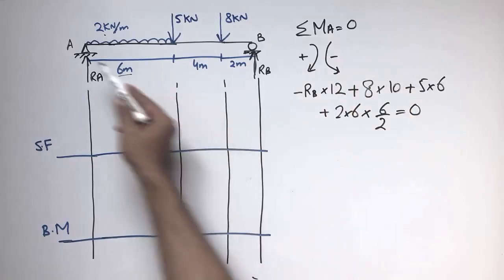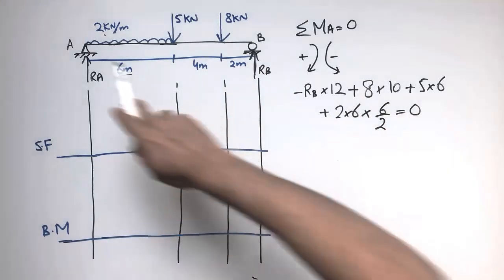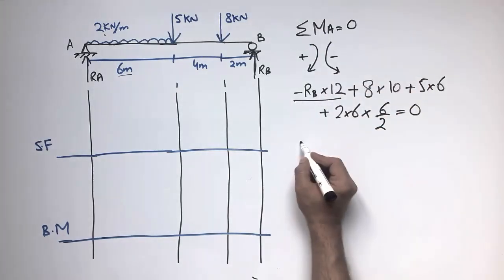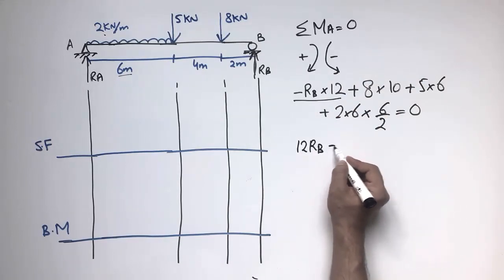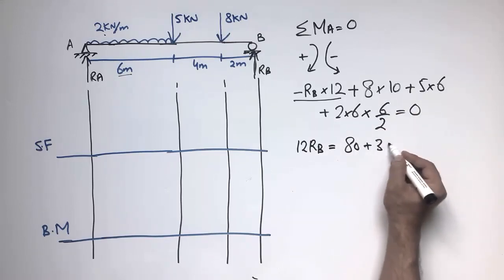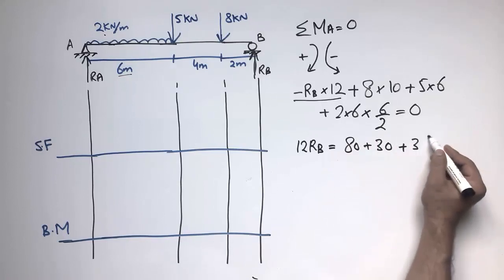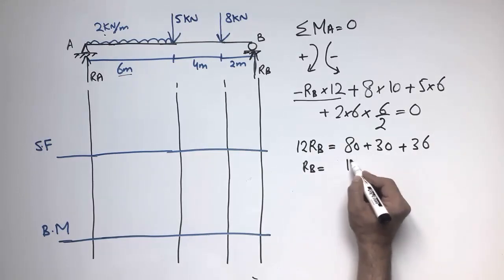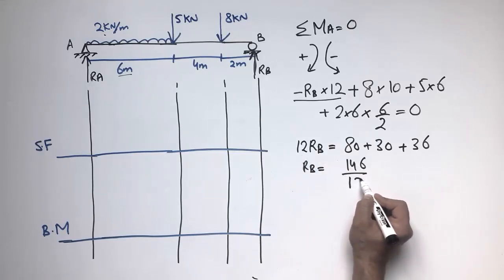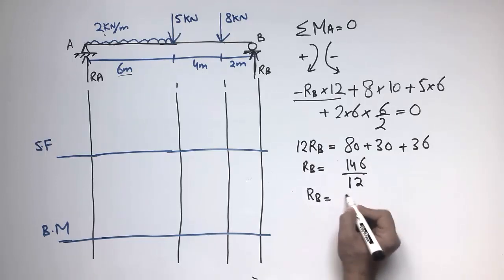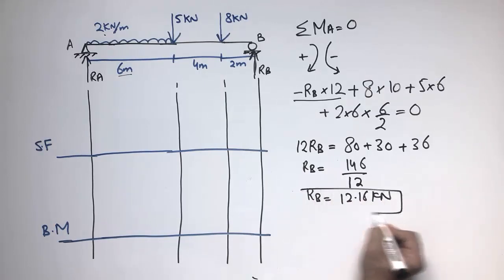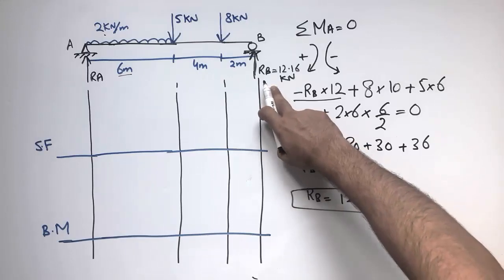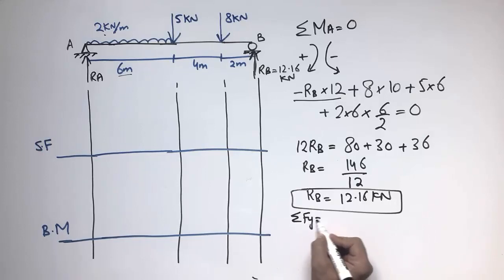Setting the summation of moments at A to zero and shifting Rb to the right side: 12 × Rb = (8 × 10) + (5 × 6) + (2 × 6 × 3) = 80 + 30 + 36 = 146. Therefore Rb = 146 / 12, which comes out to be 12.16 kN.